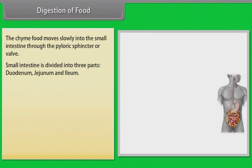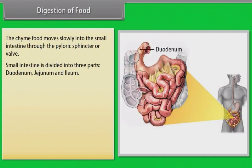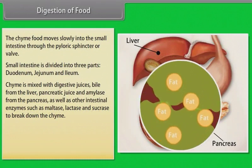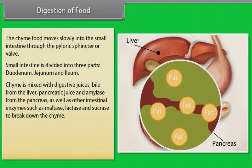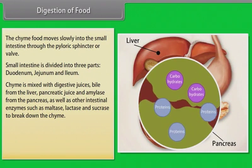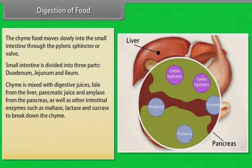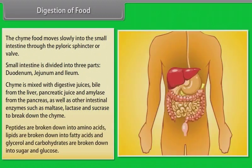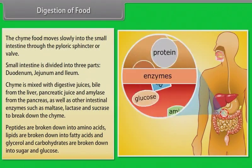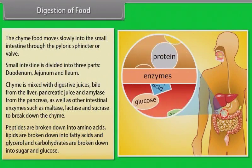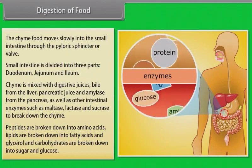The small intestine is divided into three parts: duodenum, jejunum, and ileum. Chyme is mixed with digestive juices — bile from the liver, pancreatic juice and amylase from the pancreas, as well as intestinal enzymes such as maltase, lactase, and sucrase — to break down the chyme. Peptides are broken down into amino acids, lipids into fatty acids and glycerol, and carbohydrates into sugars and glucose.